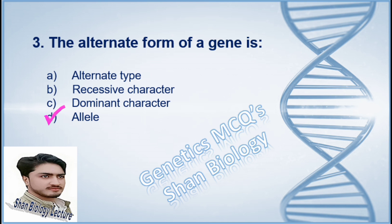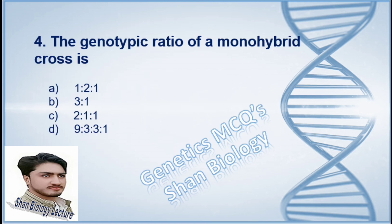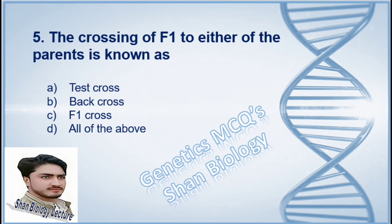The correct option is D, allele. Question 4: The genotypic ratio of a monohybrid cross is — option A 1:2:1, option B 3:1, option C 2:1:1, option D 9:3:3:1. The correct option is A, 1:2:1.